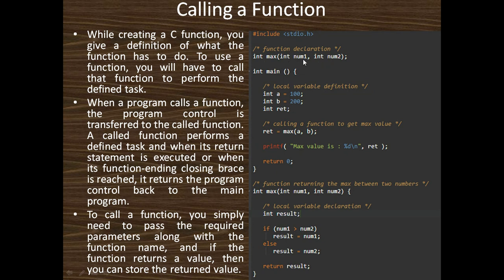Now I define how to implement the max function: int max(int num1, int num2). The function returns an integer value. Integer result; if num1 is greater than num2 and the condition is true, then result equals num1; if condition is false, then result equals num2. Whatever the value of result, it is returned. The result value is returned to the ret variable.